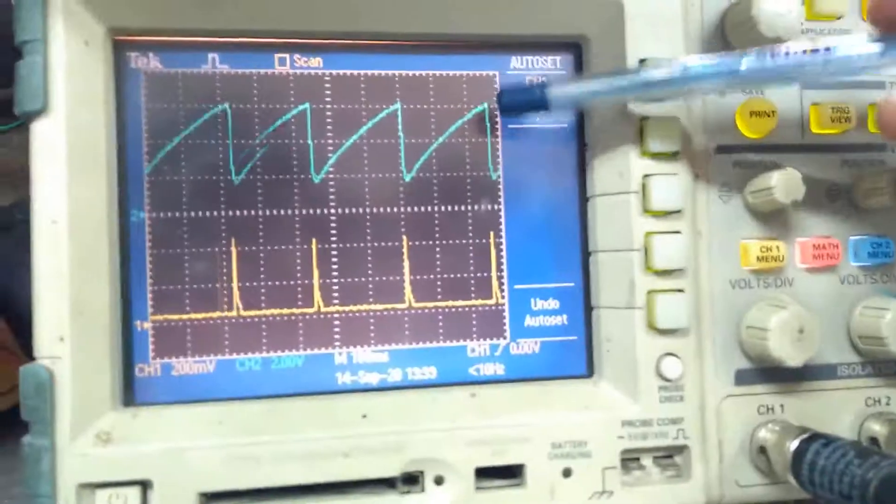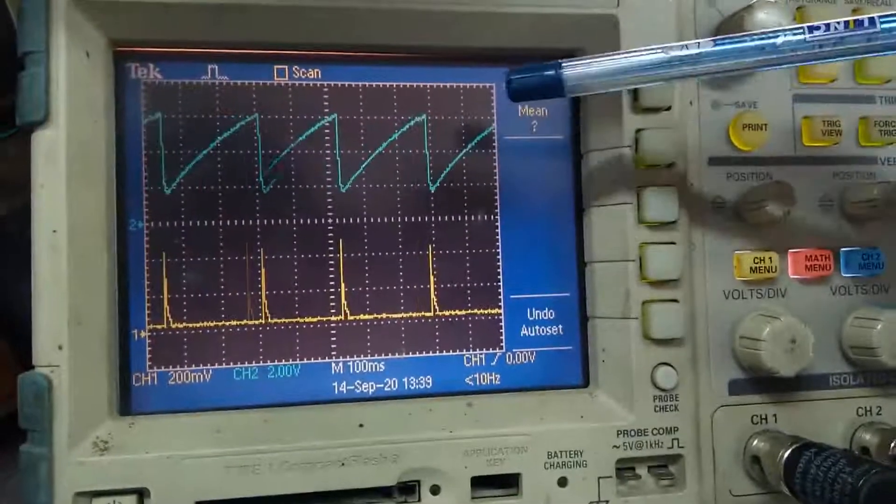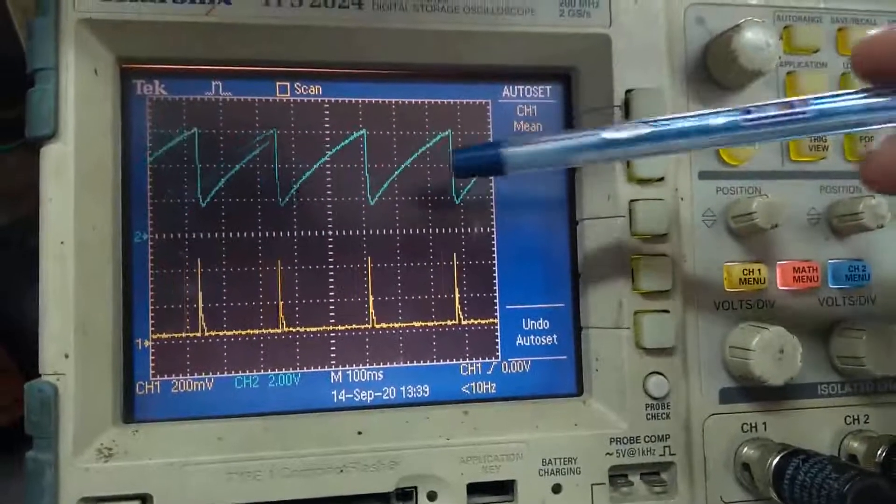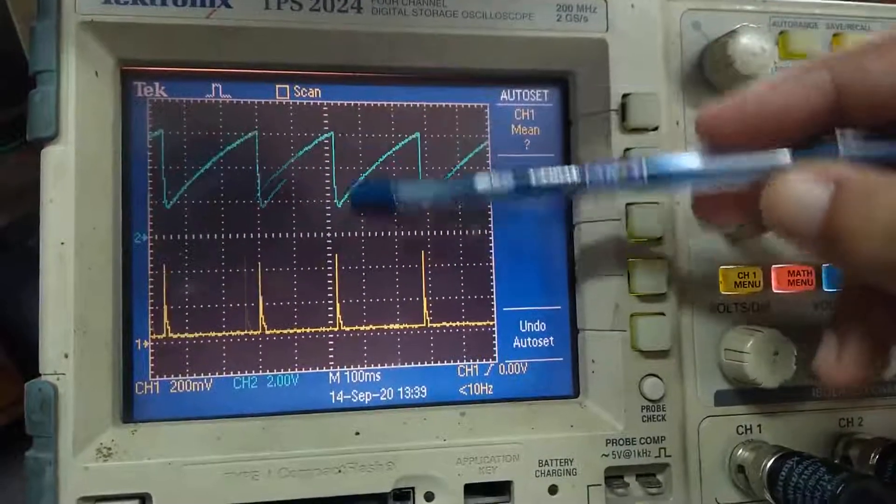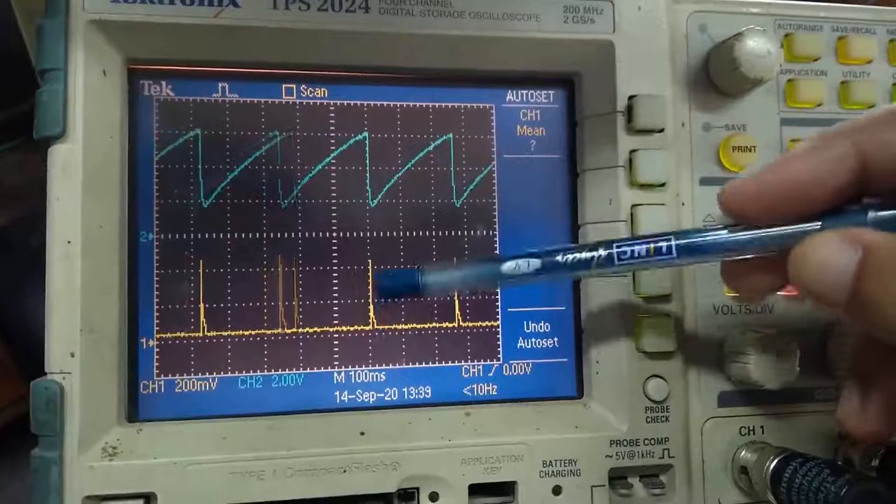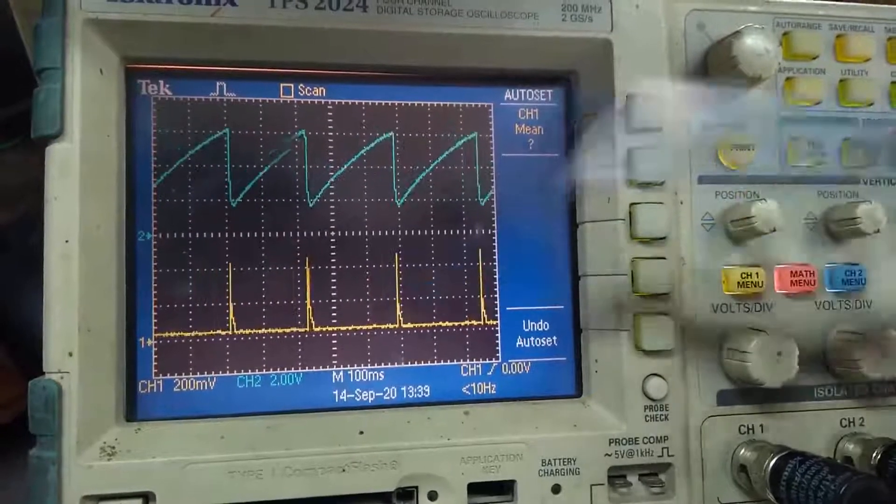This blue color waveform is showing the charging and discharging of the voltage across the capacitor. And we can see that as the discharging is going, accordingly we are getting the discharging pulses over here.